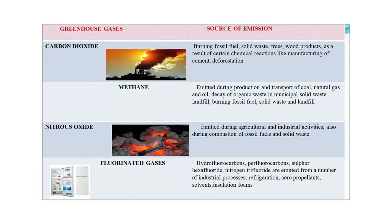Looking at the sources of greenhouse gases: carbon dioxide is the primary one, released by burning of fossil fuels, solid waste, trees, and wood products, as well as from certain chemical reactions like cement manufacturing, and also from deforestation. Methane is emitted during production and transport of coal, natural gas, and oil; decay of organic waste in municipal solid waste landfills; and burning of fossil fuels and solid waste.